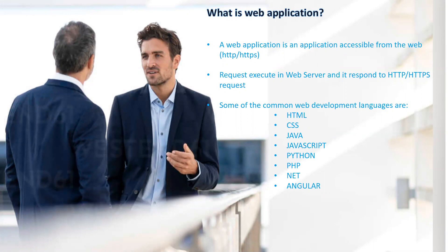Whenever you access any URL over the web, that request is executed on a web server and you get a response back. For example, when you enter google.com in your browser, it reaches Google's web server and from there it serves the front page you see. Some common web development languages are HTML, CSS, Java, JavaScript, Python, PHP, .NET, and Angular, among many others.